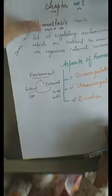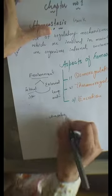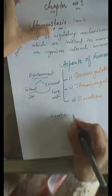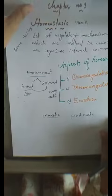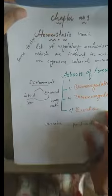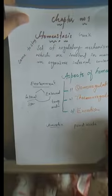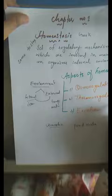For example, amoeba is a unicellular organism and its environment is pond water — it lives in pond water. There are so many different kinds of environments in which organisms live. Homeostasis is a check and balance system of our body, in which we maintain our internal conditions. It involves a set of regulatory mechanisms that maintain the internal environment.